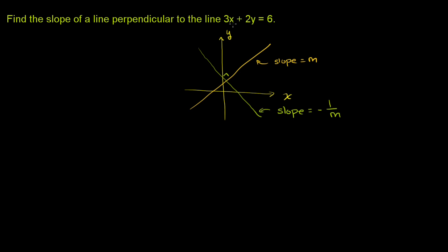Now with that out of the way, if we can figure out the slope of this line right over here, we would just have to take the negative reciprocal and we would have the slope of the perpendicular line. So let's figure out the slope of this line. Let me rewrite it: 3x plus 2y is equal to 6. The easiest thing to do is to solve for y, getting it into y equals mx plus b form, and then the slope will be pretty obvious.